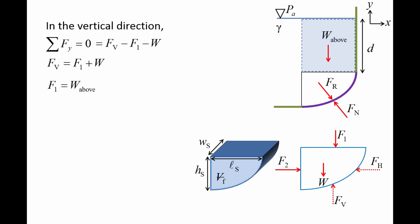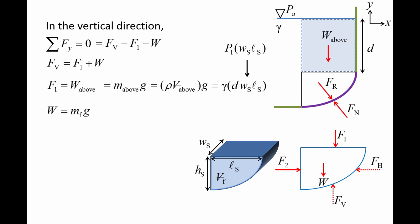F1 is the pressure force due to the weight of the fluid directly above the isolated fluid body. This weight is equal to the mass of the fluid directly above the top surface times the gravitational acceleration G. The mass of the fluid above equals its density rho times the volume it occupies. We can combine rho and G into gamma, and the volume of the fluid above is the height D times the area Ws times Ls. We also could have calculated F1 from the pressure at the top of the isolated body P1, which is gamma times depth D, times the area Ws times Ls. The weight of the isolated fluid body is its mass Mf times G, where mass is rho times Vf, giving us W equals gamma times Vf.